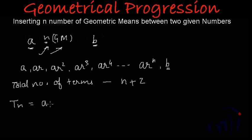And if you remember the formula of the nth or the last term, it was ar to the power n minus 1, where n is the position of the term. So this b is n plus second term.